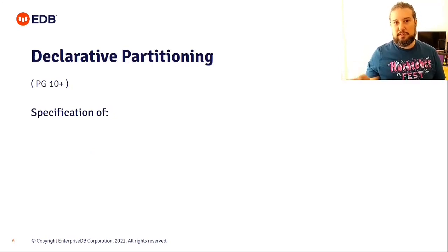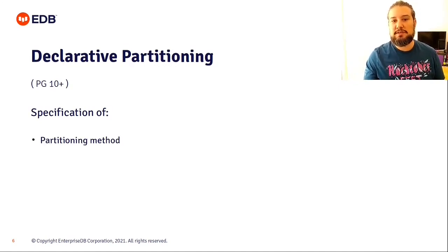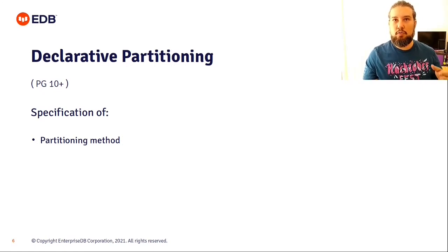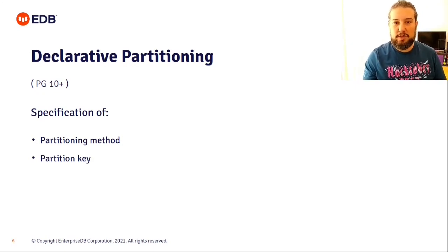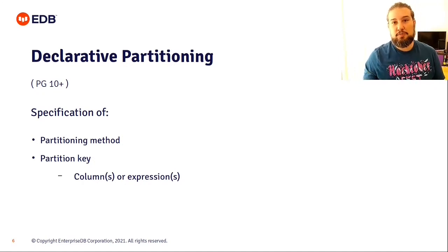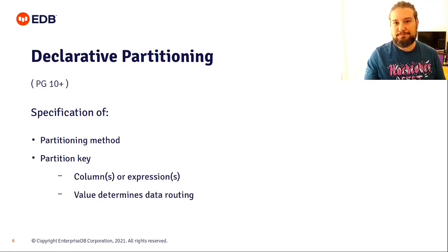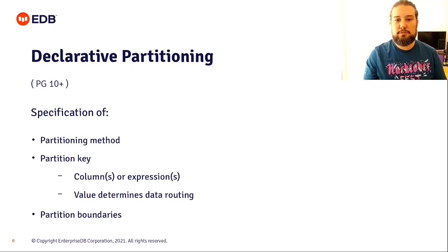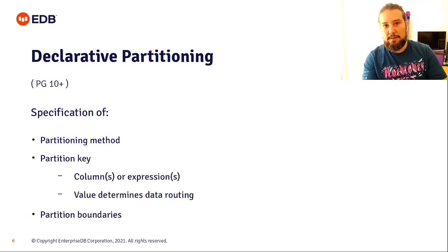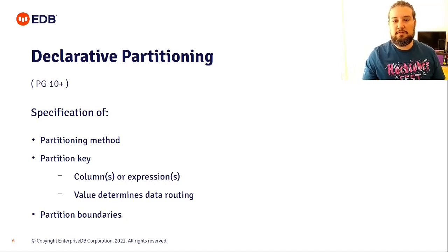Declarative partitioning is available from Postgres 10 onwards. What you declare in order to partition your data is your partitioning method — the method used to determine which rows make it into which tables — and the partitioning key, which determines where your data ends up. Your partitioning key can be a series of columns, one column, or any number of expressions. The value of the partitioning key is what actually routes the data into particular tables.